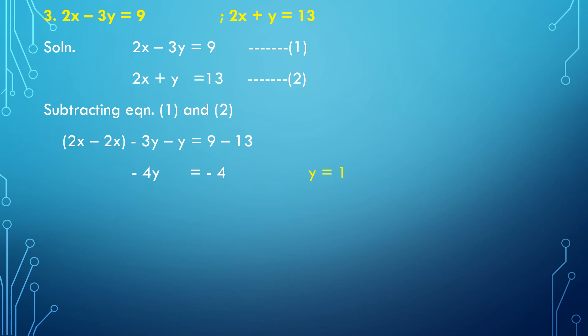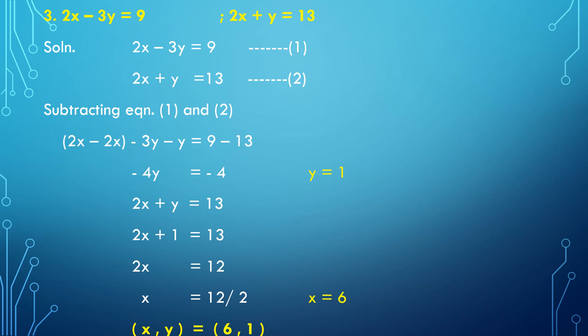Now put y equal to 1 in equation number 2. Equation number 2 is 2x plus y equal to 13. Substituting: 2x plus 1 equal to 13, so 2x equals 13 minus 1, which is 12. Hence x equals 12 divided by 2, so x equals 6. The solution of the two simultaneous equations is x equals 6 and y equals 1.